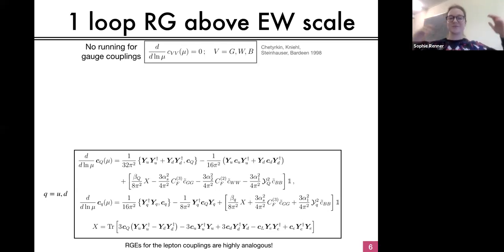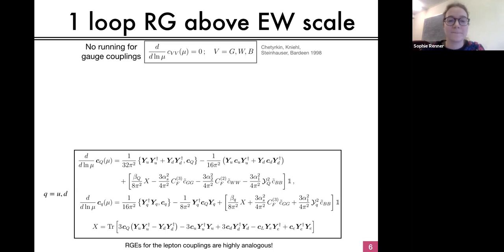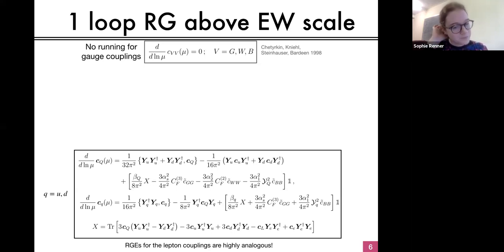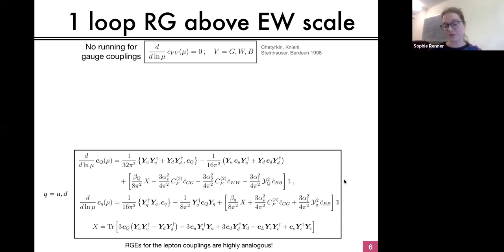So starting above the electroweak scale, we need to calculate the renormalization group equations of these coefficients that define the coupling of the ALP to the standard model particles. It turns out that as long as you normalize them with gauge couplings in front, the couplings of the ALP to gauge bosons do not renormalize. For the gluon, this goes back to an old non-renormalization theorem by Adler and Bardeen, but it turns out to be true also for the electroweak sector, even in the presence of Higgs loops. However, the couplings to fermions do run — they get contributions to their renormalization group equations, which are given in this black box for the quark couplings; the lepton couplings are highly analogous.